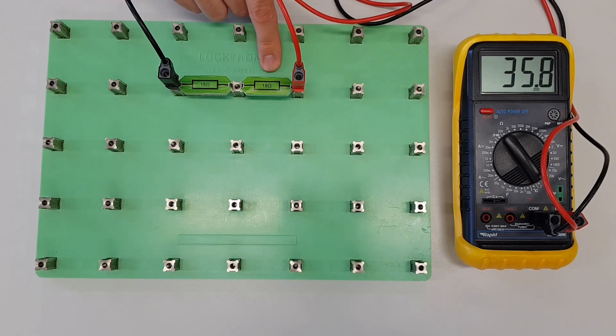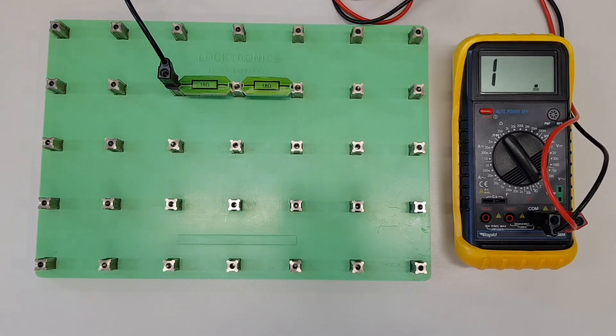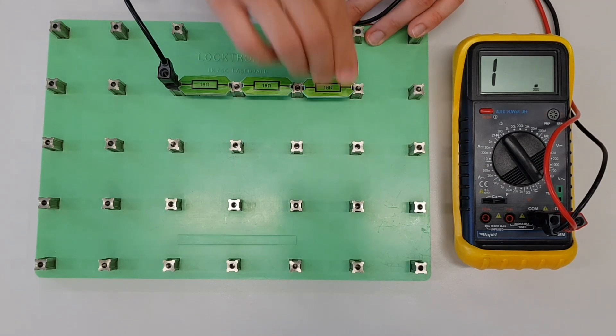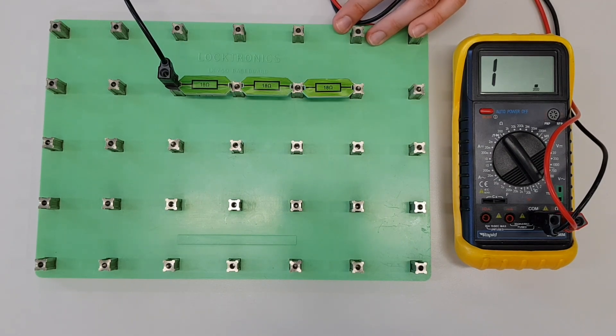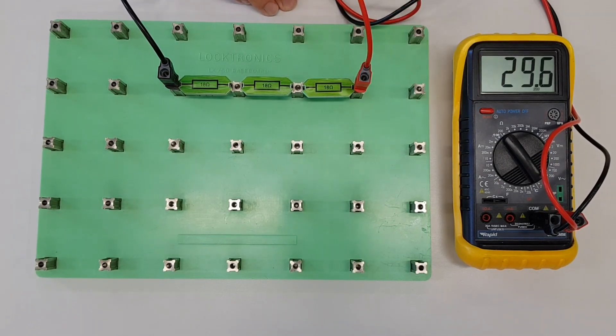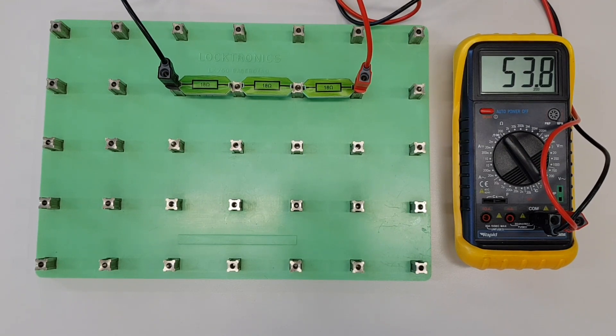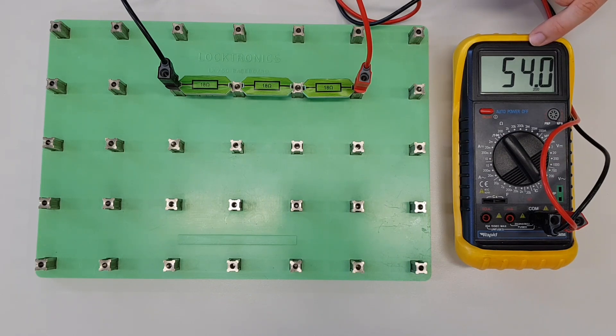We could continue to add resistors in series with this circuit. Let's have a look and see what happens. We're going to add another 18 ohm resistor into the circuit. We've now got three resistors connected in series with each other. Let's plug our multimeter in and see what reading we're getting now. Hopefully your math is strong enough that you can see what we're getting here is 54 ohms, which is a really nice result. What we've got here is 18 plus 18 plus 18 gives us 54 ohms.